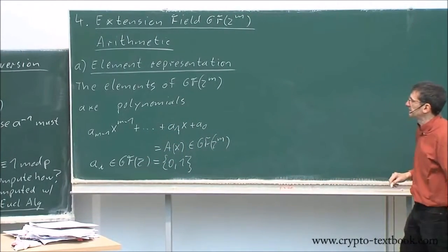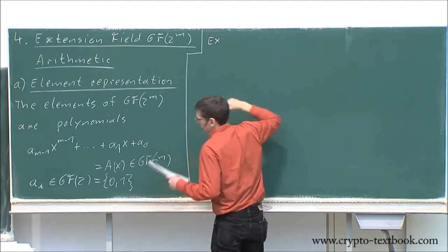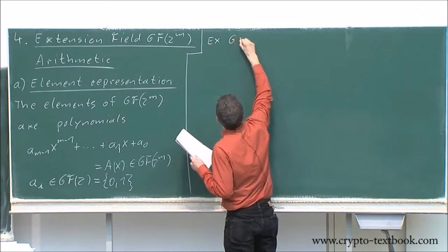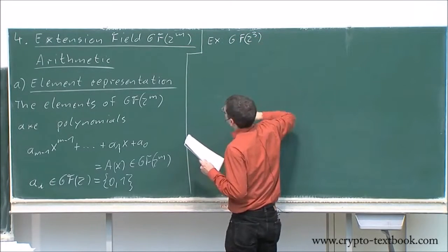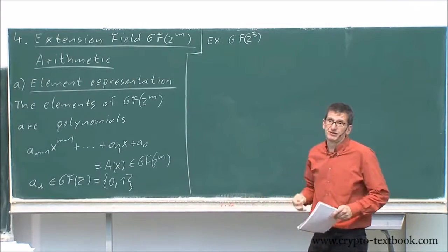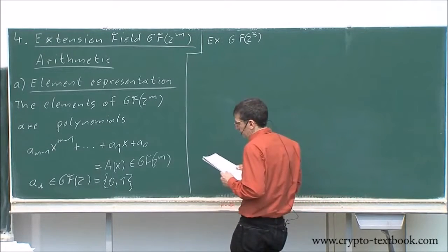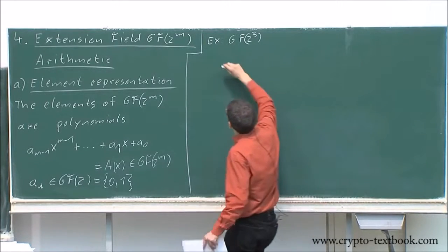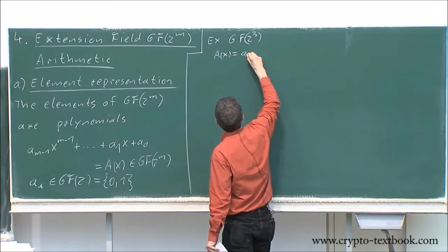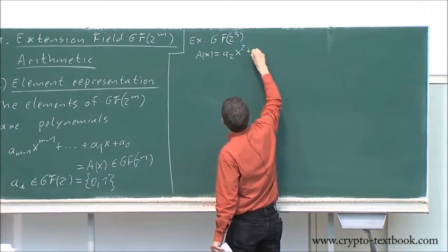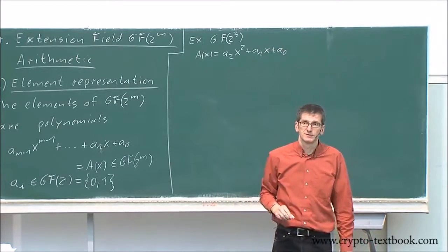Zero and one. Let's look at this tiny field GF(2^3) or 2 cubed. What we know is that any element must have this form: a_2 x^2 + a_1 x + a_0.